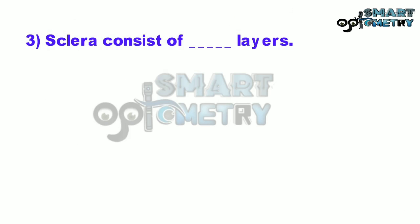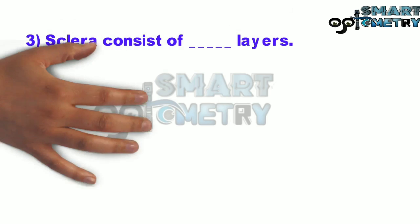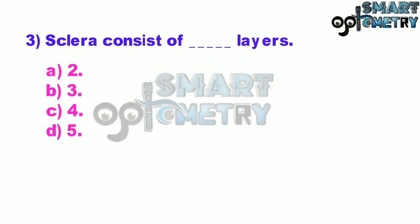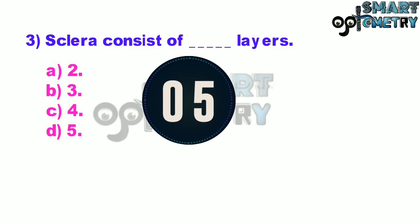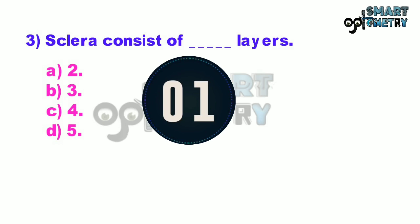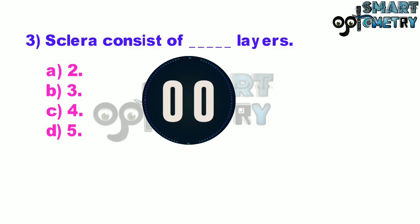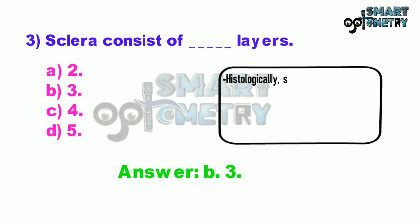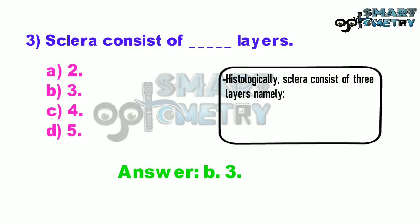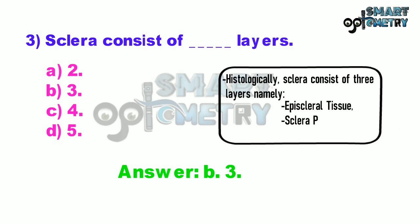Question number three: the sclera consists of how many layers? A: 2, B: 3, C: 4, D: 5. Histologically, the sclera consists of three layers: namely episcleral tissue, sclera proper, and lamina fusca.